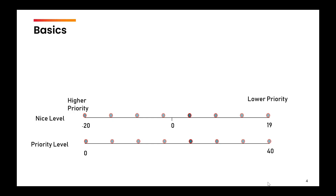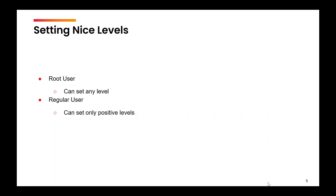Any process whose nice level is minus 20 has the highest priority, and any process whose nice level is 19 has the lowest priority. Positive numbers have lower priority; negative numbers have higher priority. The priority number ranges from 0 to 40, where 0 is the highest priority and 40 is the lowest. The nice levels range from minus 20 to plus 19.